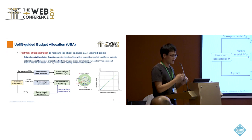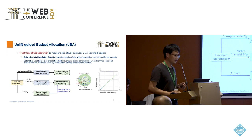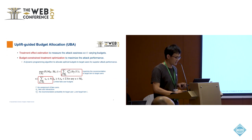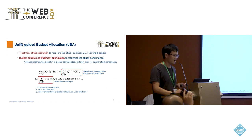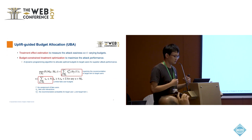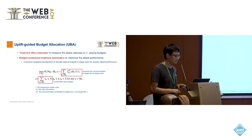Based on these two strategies, we can estimate the recommendation probability over a user-item pair given a limited budget. Given this function, we can measure the recommendation probability given different fake user budgets, and with the budget constraint, we can optimize this function to calculate the best fake user allocation vector — the best treatment — determining how many fake users to assign to each target user.